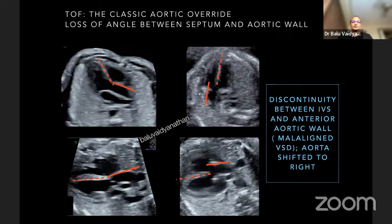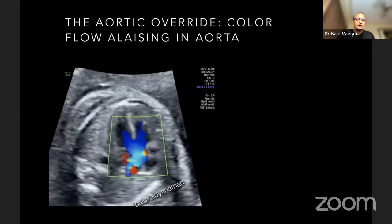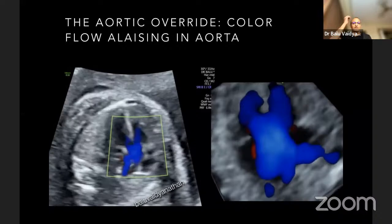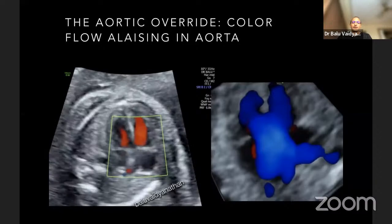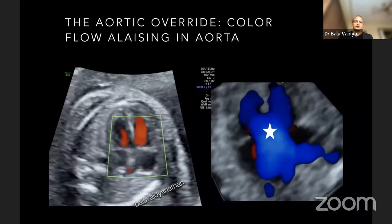The cono-ventricular description is also very good. This is a classical VSD found in tetralogy of Fallot, and you can only appreciate it in the LVOT view — you cannot see this VSD in either the four chamber view or in the three vessel view. When you put color, you find that both ventricles are ejecting into that common single outflow, and often there will be some aliasing of blood due to the larger amount going into the aorta.